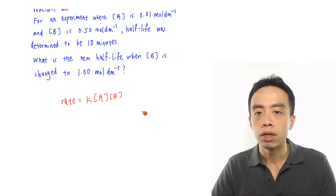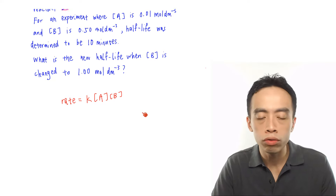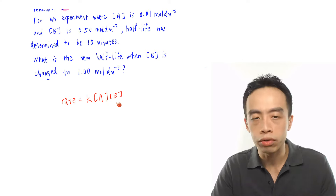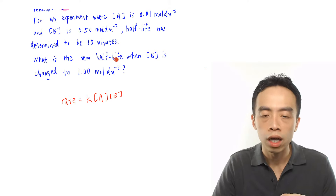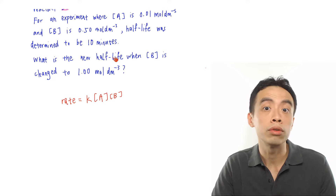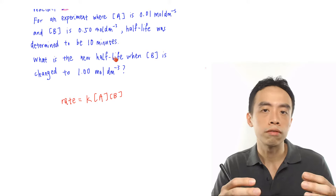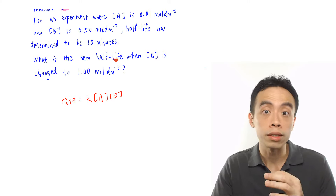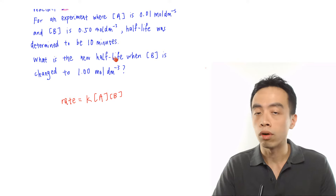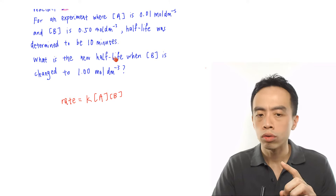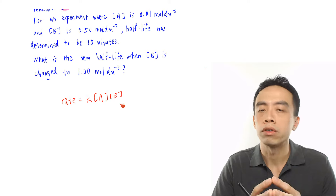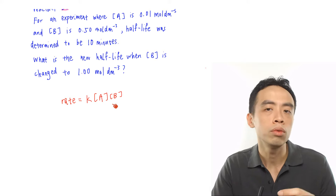Looking at this expression, this is an overall order 2 reaction because it is first-order with respect to A and first-order with respect to B. But the question asks about half-life when we change the concentration of B, which is a bit unusual because in the syllabus, we are only required to determine the half-life of first-order reactions. For first-order reactions, half-life is a constant given by: half-life equals ln 2 over rate constant K. We don't calculate half-lives for second-order or third-order reactions. So knowing this is an overall order 2 reaction and being asked to determine half-life, we kind of get stuck.